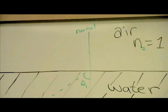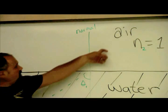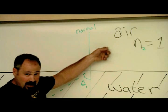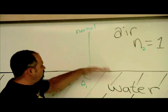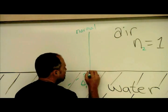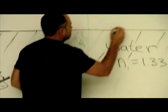Now, theta 2 has to be larger, because air has a smaller index of refraction, so the light will bend away from the normal. And so the laser light will come out like this.